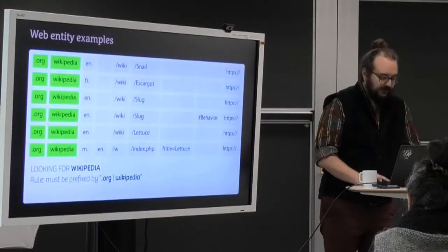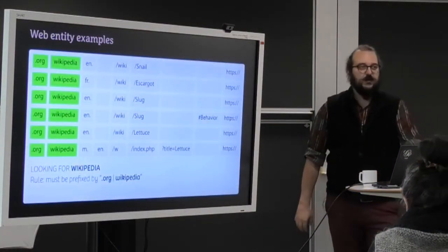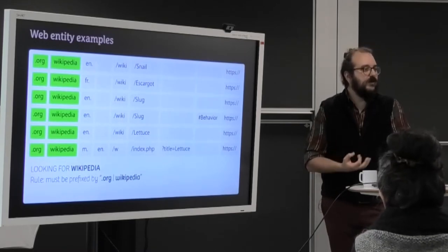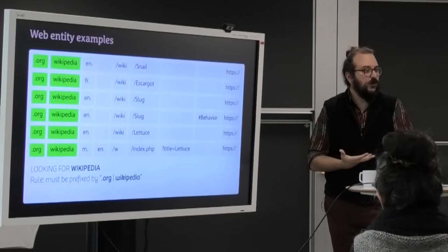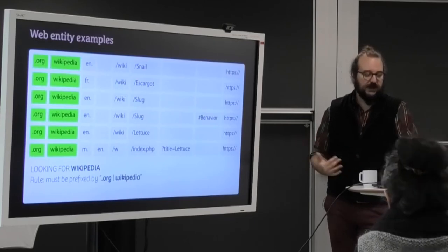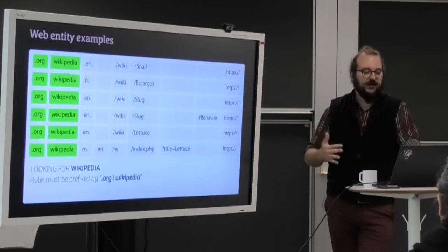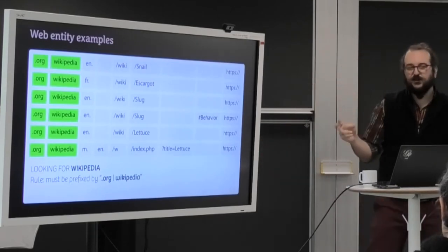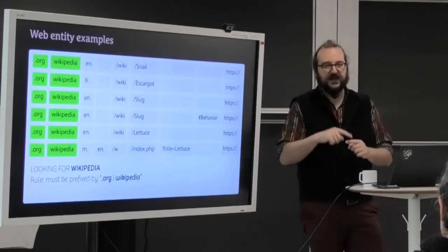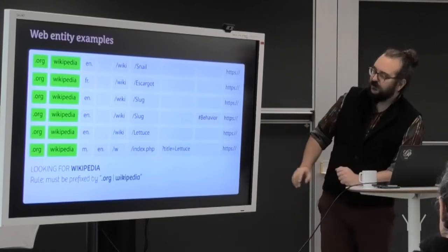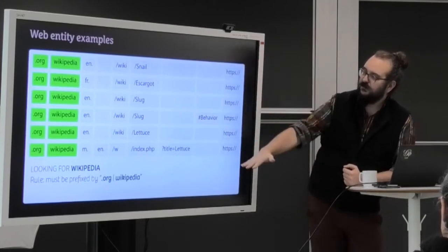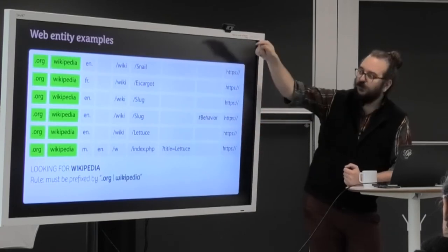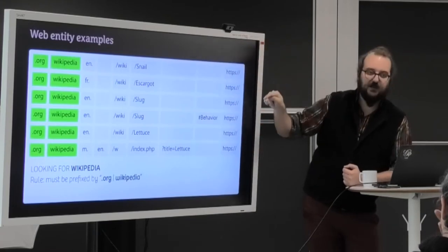So let's talk about that. Basically, a web entity is kind of a rule defined by one or many prefixes. So for instance, we can say that Wikipedia is whatever starts with .org Wikipedia. If you want, Wikipedia.org. But as you know, we reorder that from the most generic to the most specific. So here, for instance, all these pages are considered to be part of Wikipedia because they are all prefixed by .org Wikipedia.